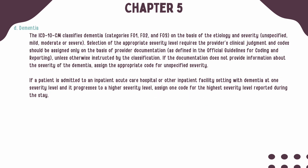Categories F01 through F03 represent dementia based on etiology and severity, such as mild, moderate, severe, or unspecified. The code selection for severity should be based on the provider's clinical judgment and documentation. If the documentation does not provide information about the severity, you should assign the code for unspecified severity.